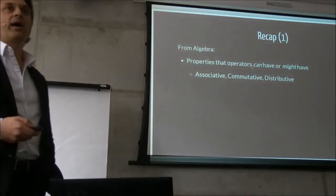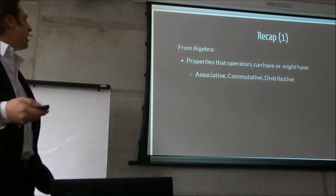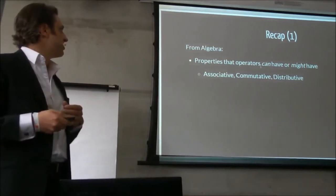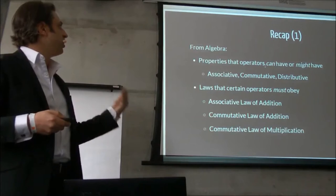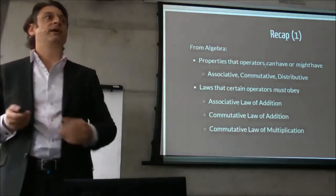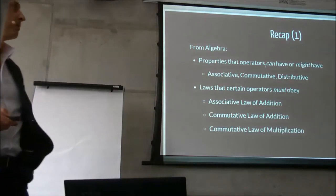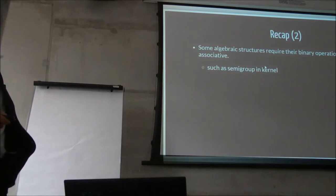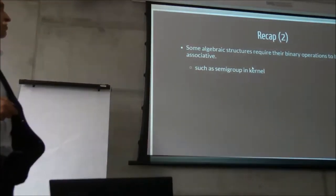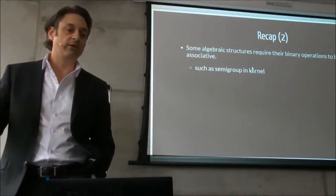I'm going to kick off with just a recap, and my apologies this has come up a few times today already. We're aware from algebra that we have various properties that operators are going to have, such as associative and the like. We then define laws that we say things must obey if we want to say something is, say, an addition or a multiplication. These things you know already, it's come up a few times. Moving on from there, we've got certain algebraic structures that also define that we need the binary operations to be associative, for example.